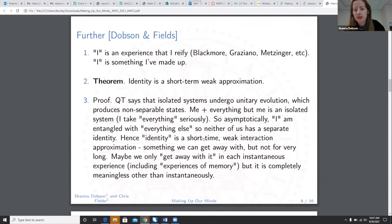So we go further. The I. The I is an experience that I reify. I is something I've made up. Who's speaking? Who is that? You're assuming a continuity over time that doesn't exist. So identity is a short-term, weak approximation. Sketchy proof. Quantum theory says that isolated systems undergo unitary evolution, which produces non-separable states. If I take me plus everything but me, this is an isolated system. We take everything seriously. So asymptotically, I am entangled with everything else, so neither of us has a separate identity. Hence, identity is a short-time, weak interaction approximation. Something we can get away with, but not for very long. Maybe we only get away with it in each instantaneous experience, including experiences of memory. But it's completely meaningless other than instantaneously.